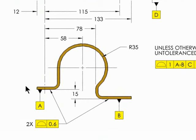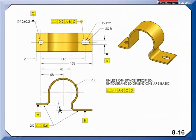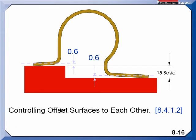Now what if I offset those surfaces? Here I have a basic 15 offsetting them. It's still the same idea. I want them to be held in location to one another. So I'm saying there's two of them, and I want their profile within 0.6. It doesn't matter that they're offset. The basic dimension on the last example was 0, 0 basic.